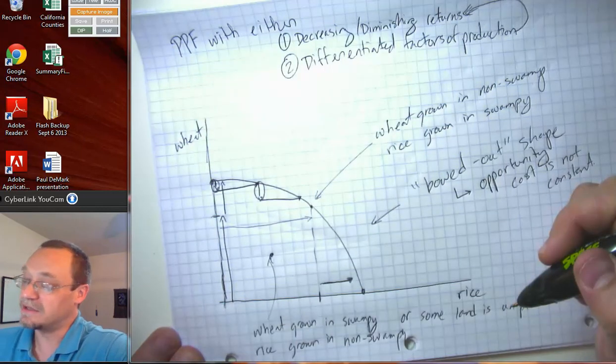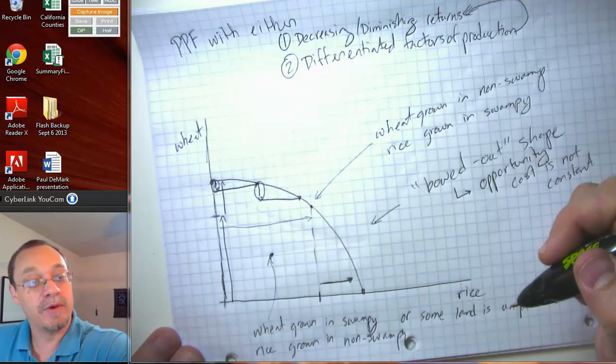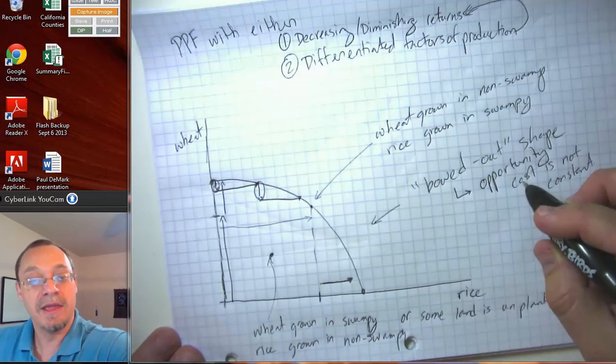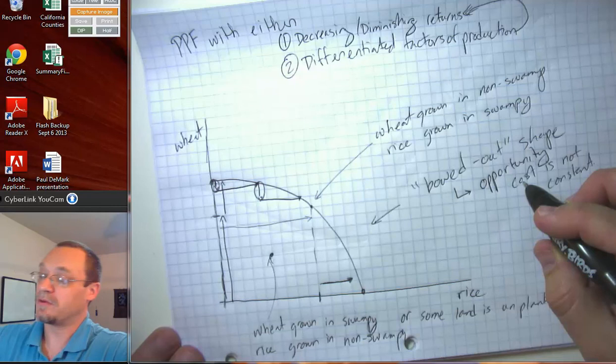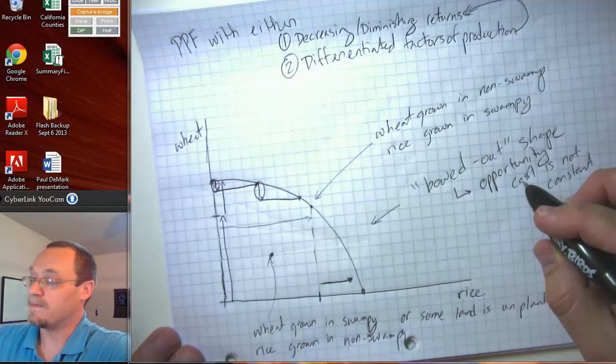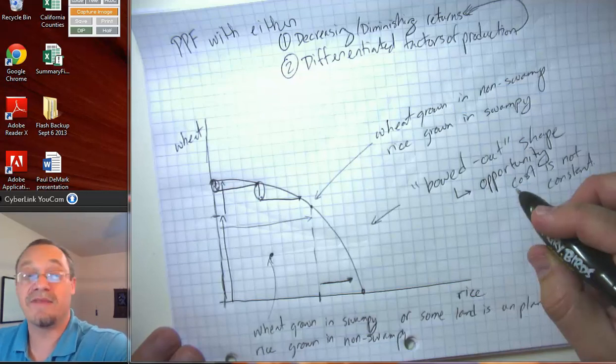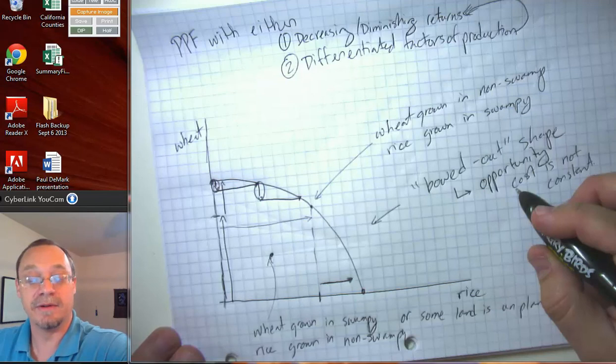And there's a sense in which when you have this kind of bowed out shape to the PPF, it's going to steer you towards being somewhere in the middle. Because to get those last few units of wheat or those last few units of rice, you have to give up a heck of a lot of the other good. And that's going to generally not be very appealing to you.